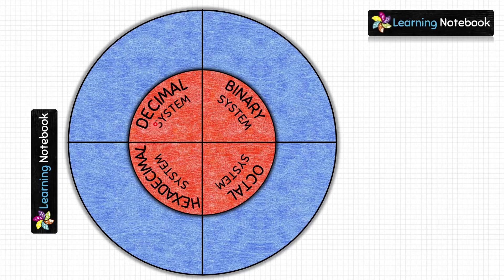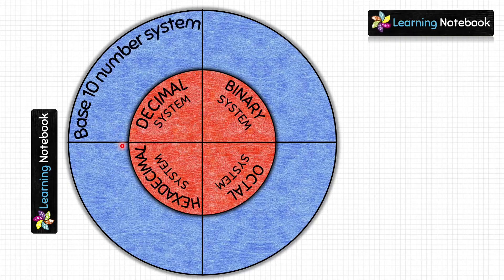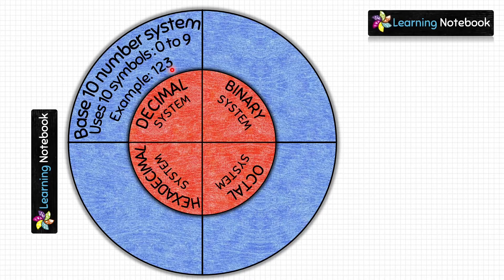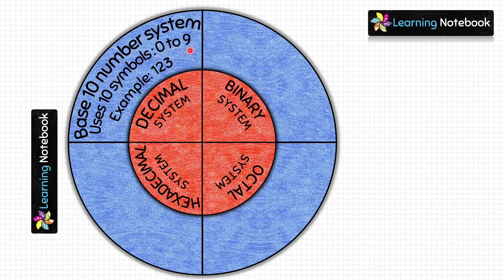First, we will write about the decimal system. It is a base-10 number system. It uses 10 symbols, that is from 0 to 9. For example, 123 is an example of a decimal number. So we can form any number using these 10 symbols, that is from 0 to 9.